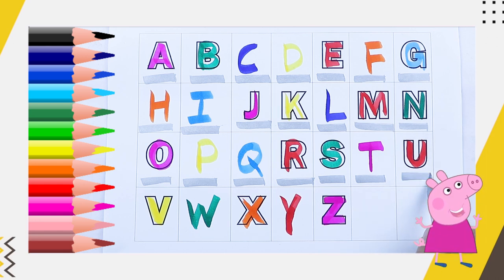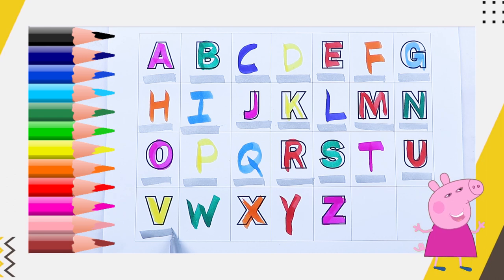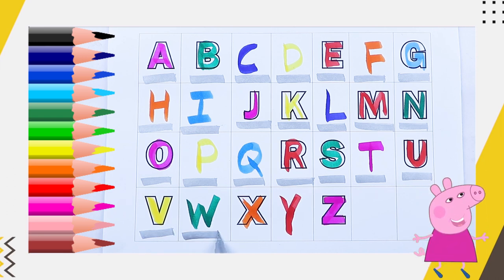Red color U. U for umbrella. Yellow color V. V for van. Green color W. W for watch.